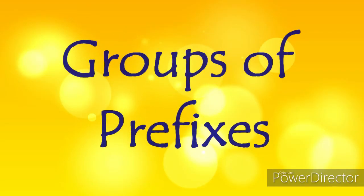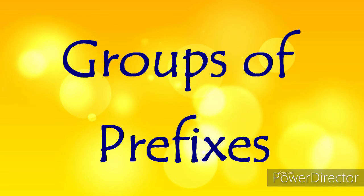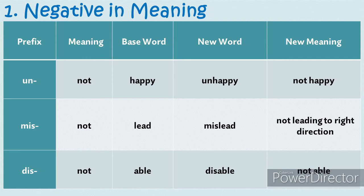Let us study the prefixes according to their groups. The first group is prefixes that indicate negation or negative meaning. Adding these prefixes to words indicates a negative meaning. For example, the prefix un- means not. When added to the base word happy, the new word becomes unhappy, with a new meaning: not happy. Another prefix here is mis-, which also means not. When added to the base word lead, the new word is mislead, with a new meaning: not leading to the right direction.